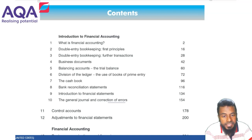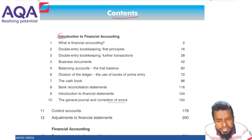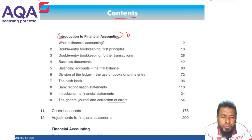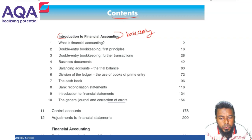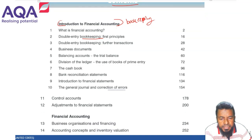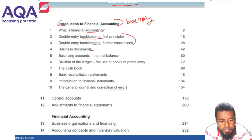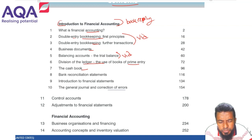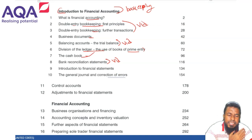Let's explore the contents. First is introduction to financial accounting — bookkeeping, which covers day-to-day accounting transactions. Chapter topics include: what is financial accounting, double entry and business documents, balancing accounts, the trial balance — I have a video on that — ledgers and books of prime entry, and the cash book. I don't have videos on those yet, but they are really basic. Bank reconciliation — I do have a video on that channel.